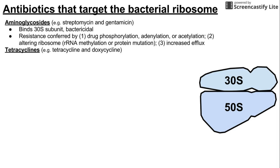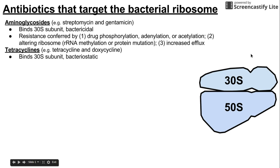The second class is the tetracyclines. The original drug is tetracycline, and a newer one is doxycycline. These also bind to the 30S subunit but are bacteriostatic rather than bactericidal, meaning they prevent bacteria from growing and stunt growth without necessarily killing the bacteria.